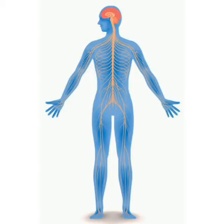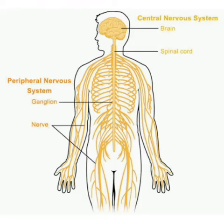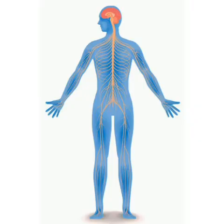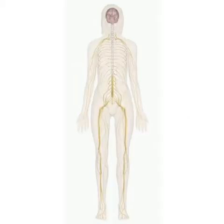Information is transmitted from the brain to body parts and from the body parts to the brain through the spinal cord. The spinal cord has the width of our little finger and a length of 40 to 50 cm. How does the spinal cord remain in contact with body parts? It is through nerves.